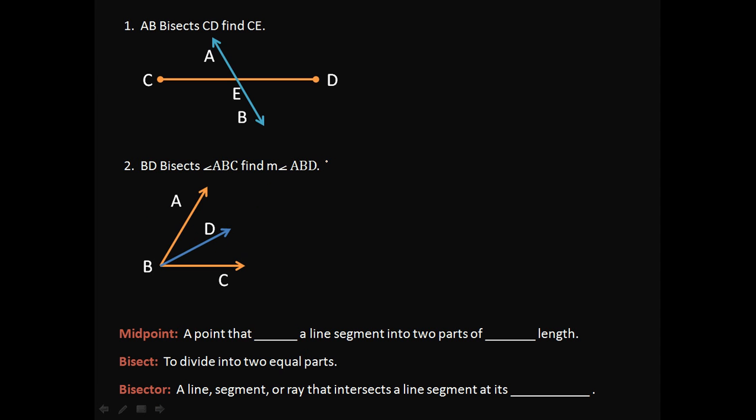Go ahead and give these a try. On this one, it says that AB bisects CD. So find CE. So I'm going to tell you that ED is three inches. So go ahead and find the length of CE. Now that you figured that out,